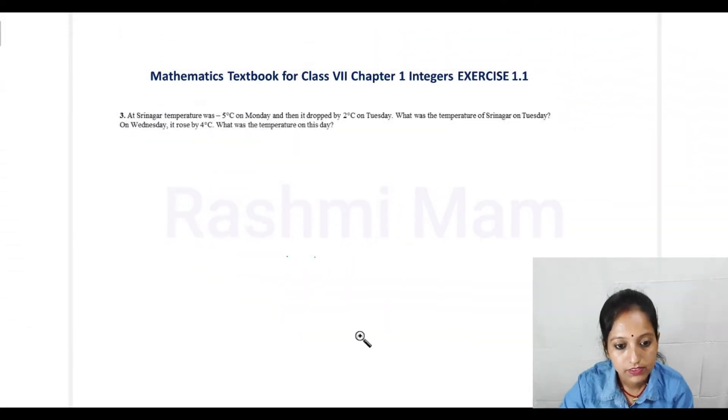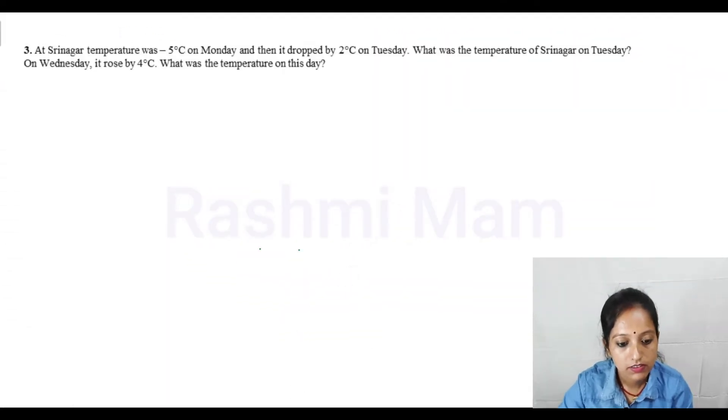Third question: At Srinagar, temperature was minus 5 degrees C on Monday and then it dropped by 2 degrees C on Tuesday. What was the temperature of Srinagar on Tuesday? On Wednesday it rose by 4 degrees C. What was the temperature on this day? Let me read the question first.